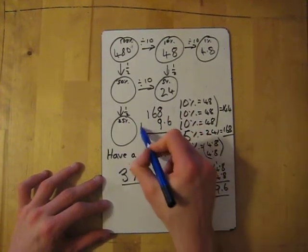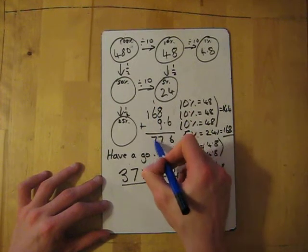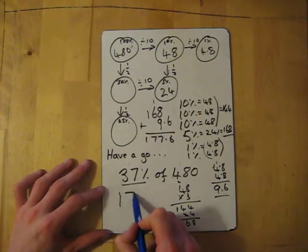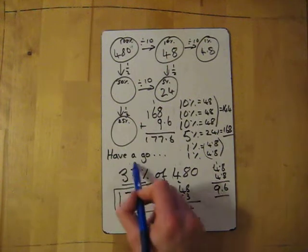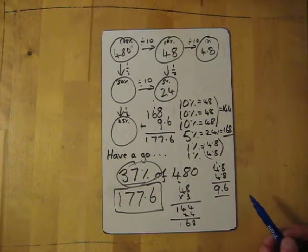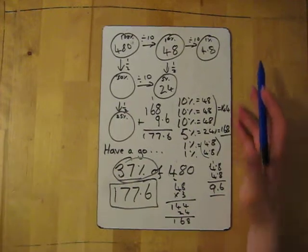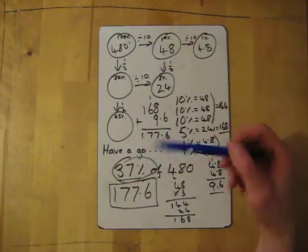And finally I'm going to add 168 and 9.6. My units are lined up, so it'll be 177.6. And that's probably as hard as it's going to get: 37% of 480. Quite a lot to do, but we've got all the processes to do it. Use the grid: across divide by 10, going down half.